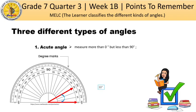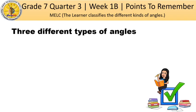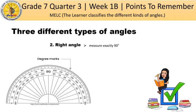The next type of angle is what we call the right angle, which measures exactly 90 degrees. Using the protractor, the arrow points to exactly 90 degrees. The measure from the longer arrow to the smaller arrow is 90 degrees — that is the measure of the angle based from the protractor.